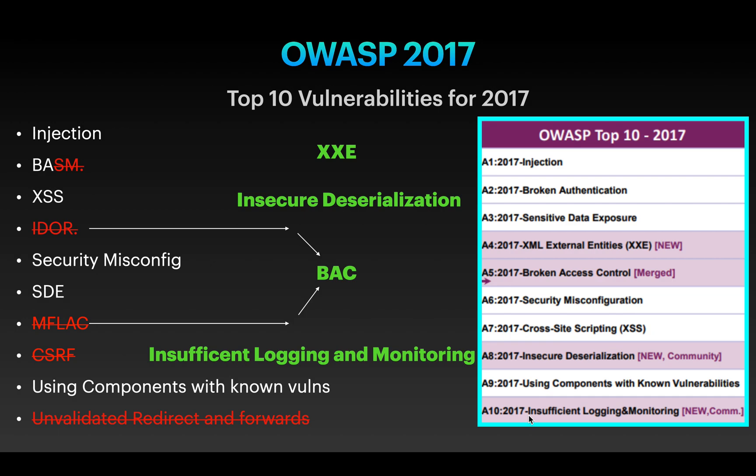Let's do a quick recap of the OWASP 2017 vulnerabilities: Injection, Broken Authentication, Sensitive Data Exposure, XXE, Broken Access Control, Security Misconfiguration, XSS, Insecure Deserialization, Using Components with Known Vulnerabilities, and Insufficient Logging and Monitoring.